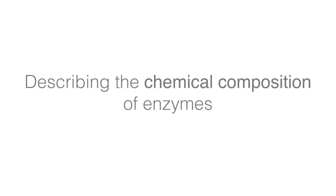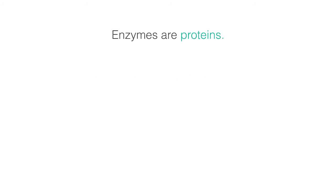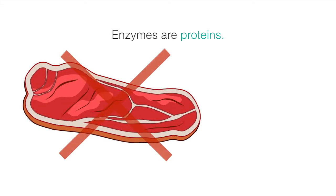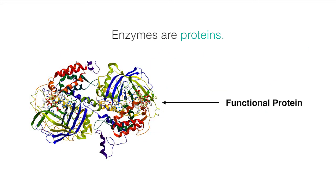Keeping up so far? If not, rewind and listen again before we move on to describing the chemical composition of enzymes. To start, you need to know that enzymes are proteins. Proteins are large molecules that have important roles in the body — and proteins here doesn't refer to steak or the stuff bodybuilders drink. Enzymes are more specifically known as functional proteins, meaning that they carry out specific functions. In an enzyme's case, that's speeding up chemical reactions.